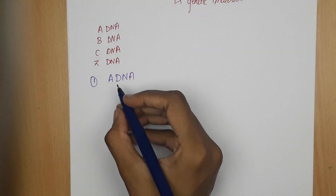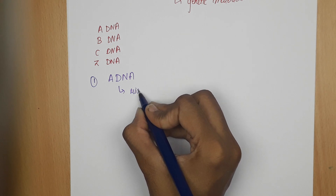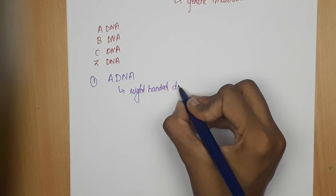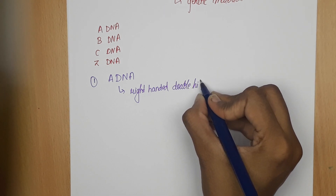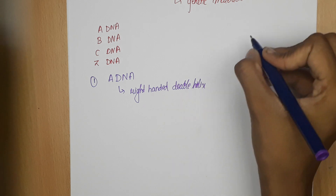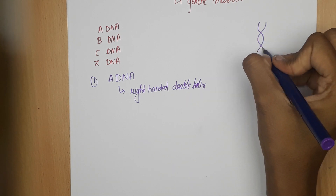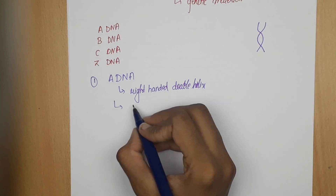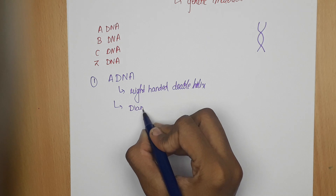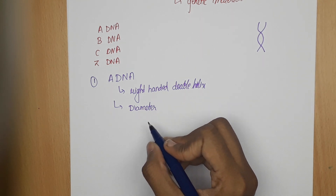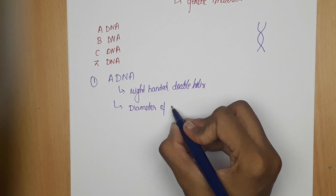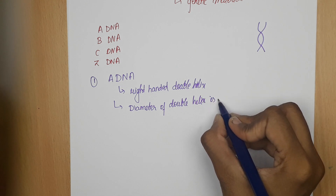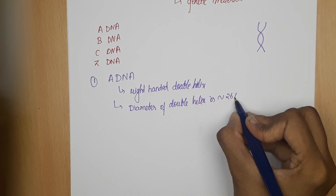A-DNA is a right-handed double helix. I think you all know what a double helix is — DNA is a double helical structure. The diameter of this A-DNA double helix is approximately 26 angstroms.